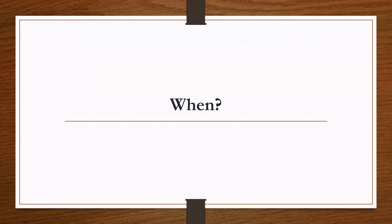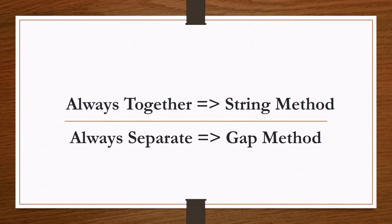Now, when do we apply the gap method and when do we apply the string method? Whenever two or more things are always together, go for the string method. And whenever two or more things are always separate, go for the gap method.